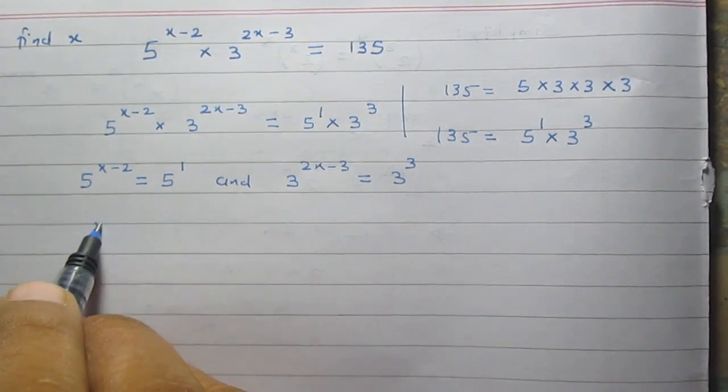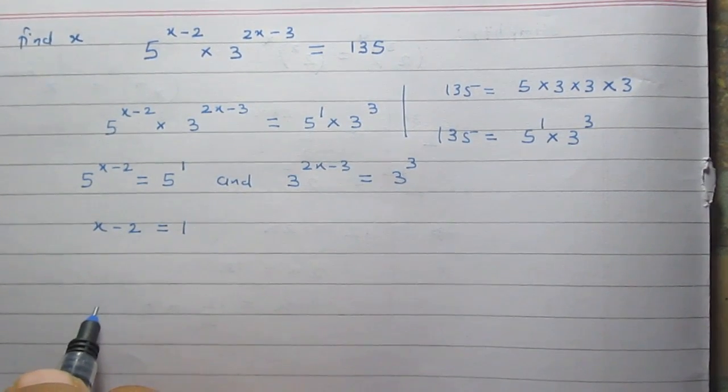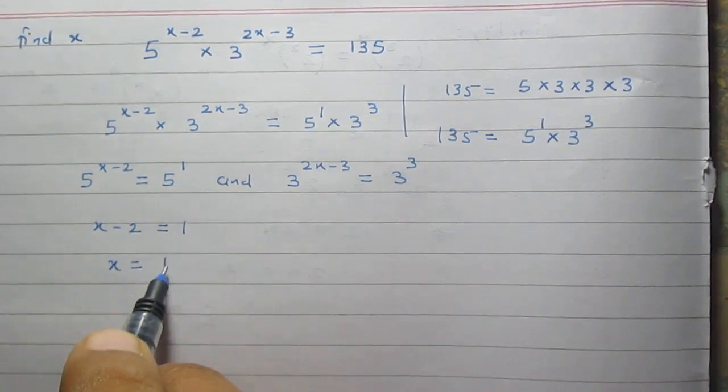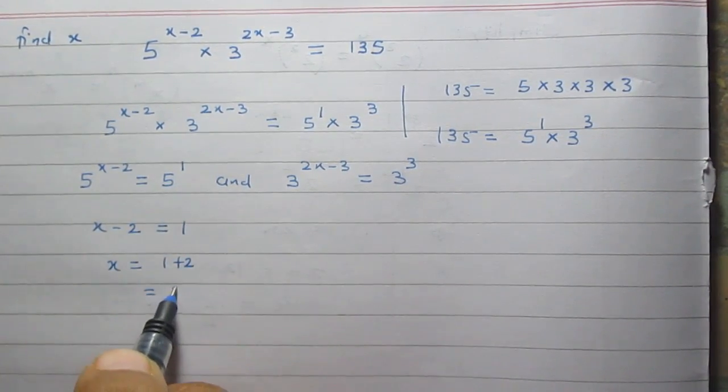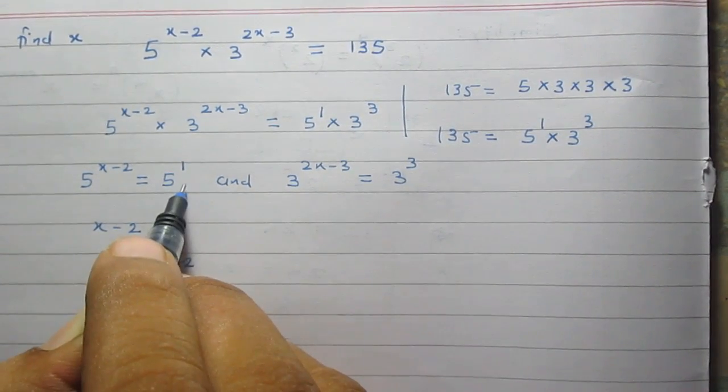By this result we can say x minus 2 is equal to 1. It is a linear equation and we will get x is equal to 1 plus 2 which is 3. So x is equal to 3 according to this situation.